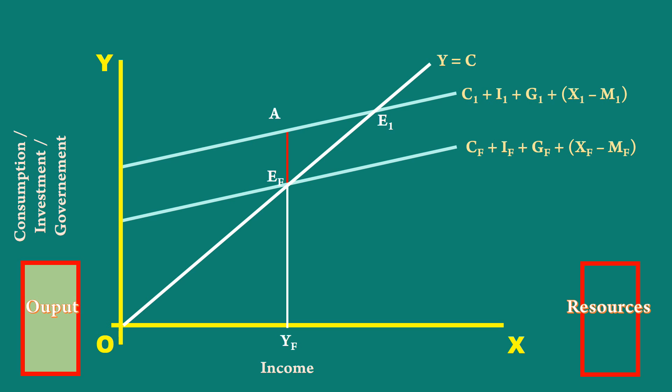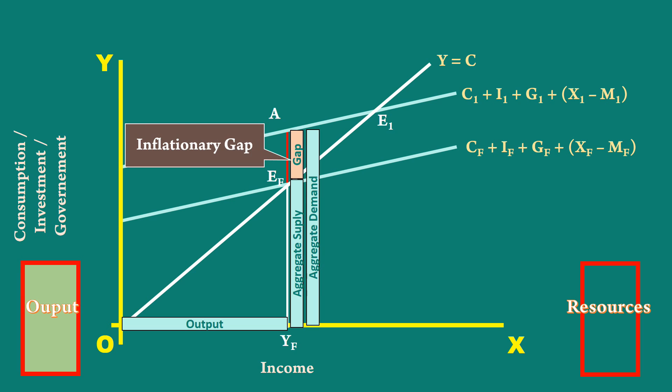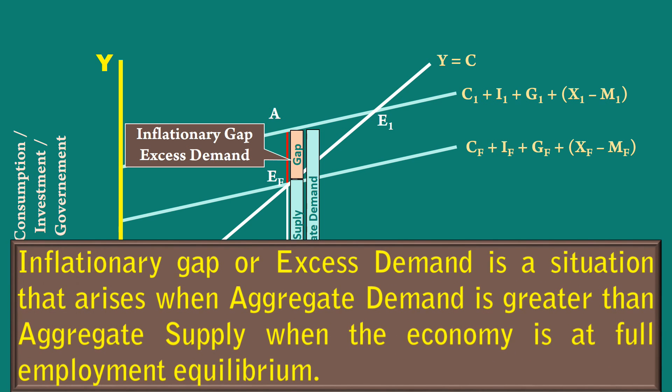What are its implications? The output is OYF is equal to YF EF. This is aggregate supply. The economy's expenditure is YF A. This is aggregate demand. Aggregate demand is greater than aggregate supply. There is a gap between aggregate demand and aggregate supply. This gap is called inflationary gap. This is also known as excess demand. So inflationary gap or excess demand is a situation that arises when aggregate demand is greater than aggregate supply when the economy is at full employment equilibrium.